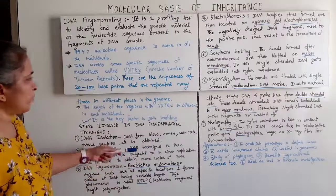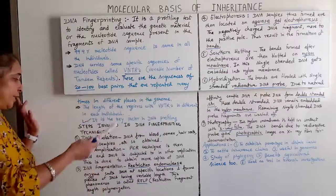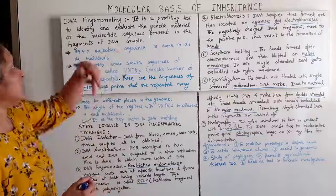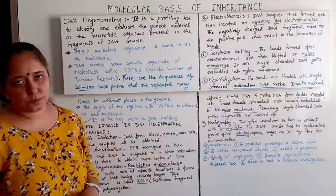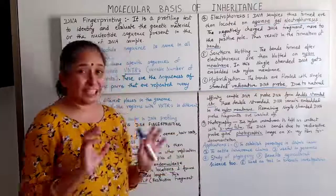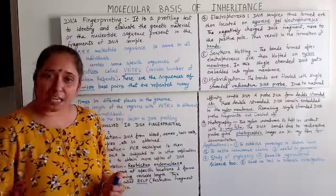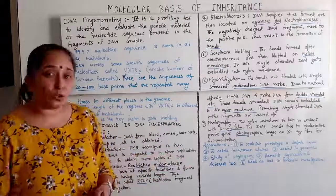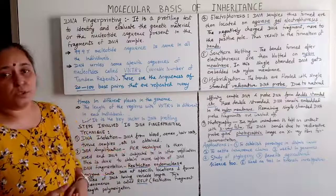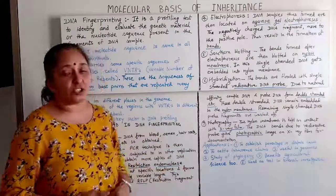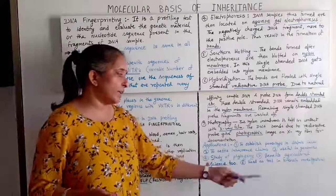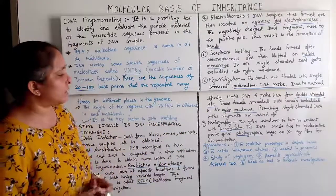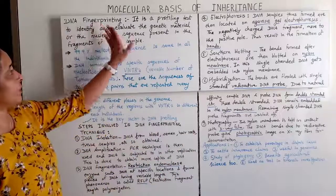This question is usually asked as a long answer, so write it point-wise with subheadings. Applications of DNA fingerprinting: to establish parentage in dispute cases; to settle insurance claims; useful in genomics; study of phylogeny; benefits agricultural science; and used as a tool in forensic investigations.